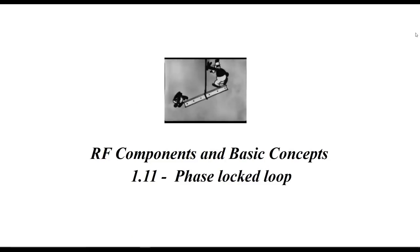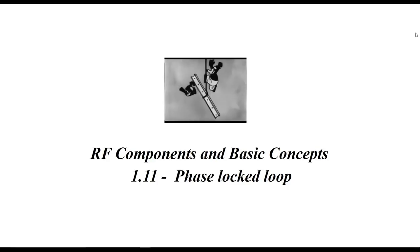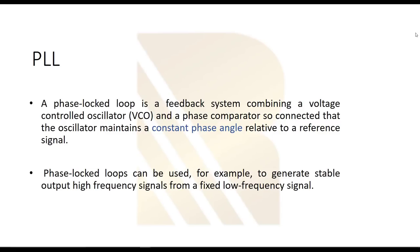In this section we are going to explain phase locked loop, and we will see that it's actually one of the necessary blocks and circuits that should be inside the transmitter and receiver. A phase locked loop is a feedback system combining a voltage controlled oscillator (VCO) and phase comparator, so connected that the oscillator maintains a constant phase angle relative to a reference signal. In simple terms, the PLL is a kind of controller that controls the VCO in order to maintain a constant phase angle.